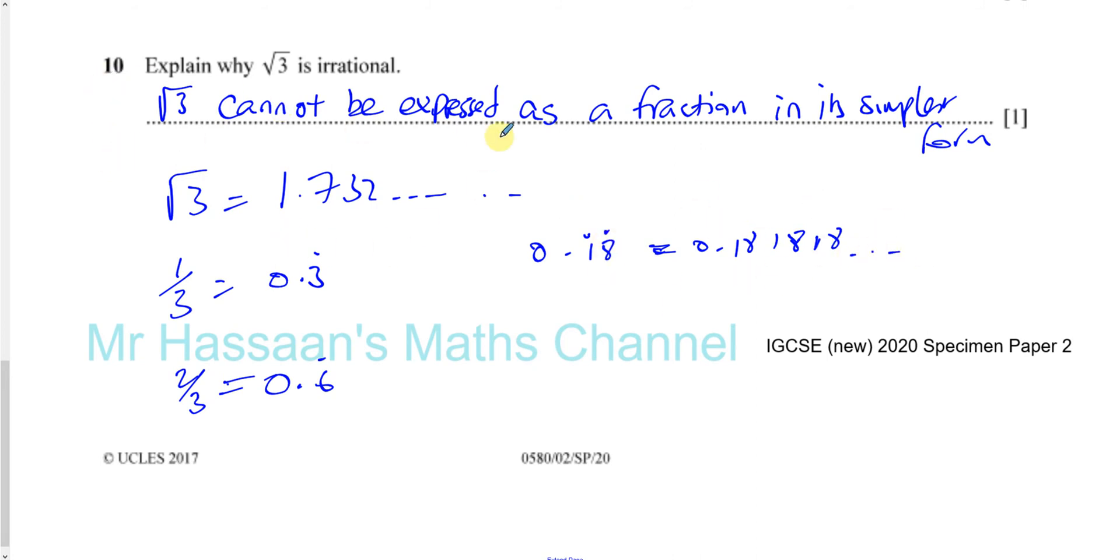So any number that cannot be expressed as a fraction of a numerator, integer, and denominator, which is in simplest form, is therefore an irrational number. That's what it means. Irrational means cannot be expressed as a ratio of integers, basically.